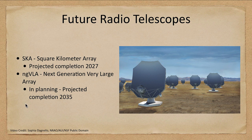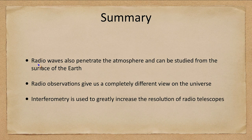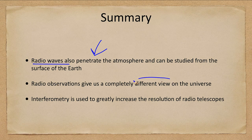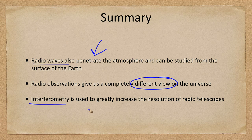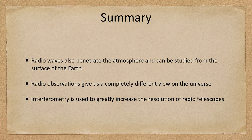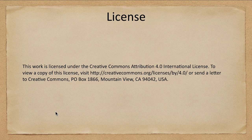To summarize: radio waves are easy to observe from the surface of the Earth because they penetrate the atmosphere and can be studied from the ground. They give us a different view of the universe — we see objects that emit radio waves but do not emit other types of electromagnetic radiation. We also discussed interferometry being used to increase the resolution of radio telescopes. That concludes this lecture on radio telescopes. Until next time, have a great day everyone, and I will see you in class.